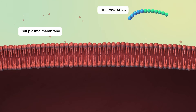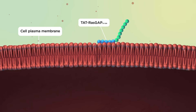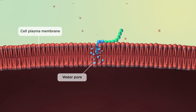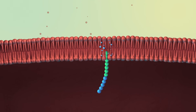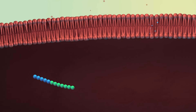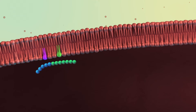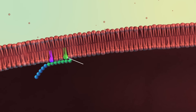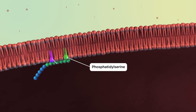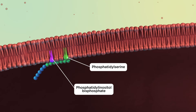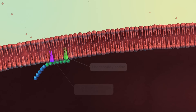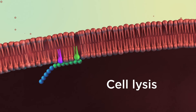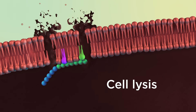To do so, TAT-RAS-GAP uses its TAT moiety to translocate across plasma membranes. Once inside, it binds phospholipids in the inner leaflet of the plasma membrane, such as phosphatidylserine and phosphatidylinositol bisphosphate. This destabilises the plasma membrane and provokes lysis of the cancer cells.